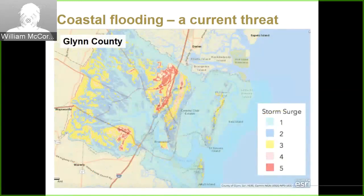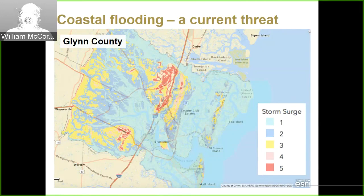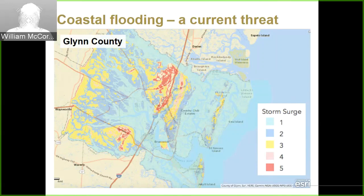Looking south to neighboring Glynn County, a map from their emergency planning agencies shows the same kind of storm surge vulnerability. The acute vulnerability to coastal flooding is not unique to Chatham County or Glynn County — it stretches up and down the eastern seaboard and across much of the Gulf of Mexico. The challenge here is to develop and pilot a smart sea level sensor network, embedded in a community co-development framework, that can be rolled out to other coastal communities.